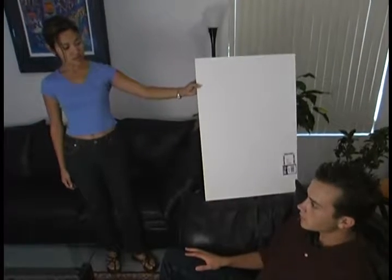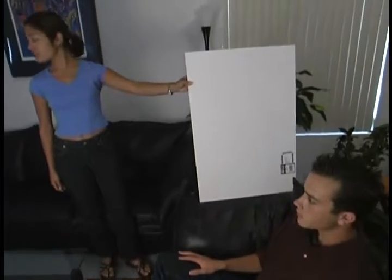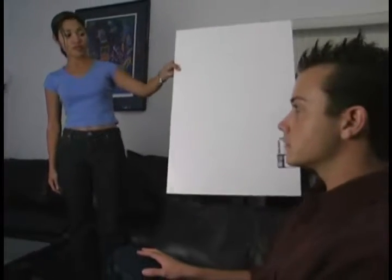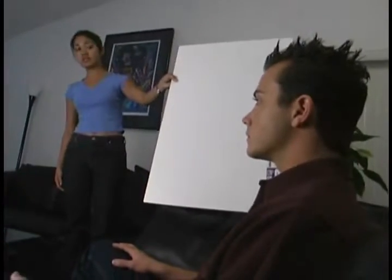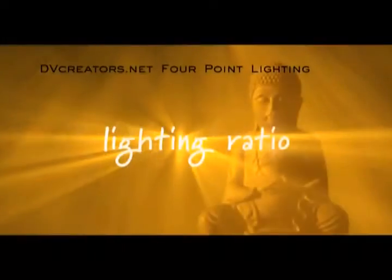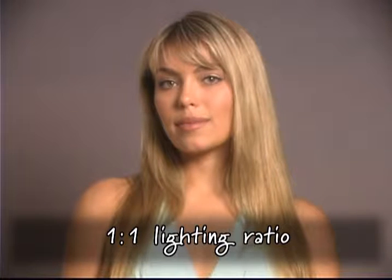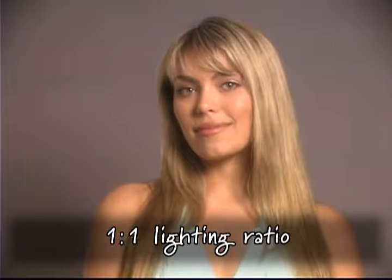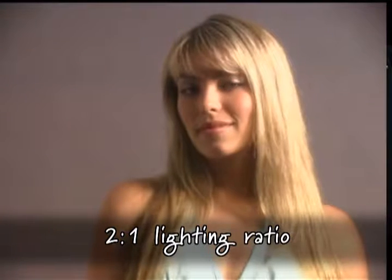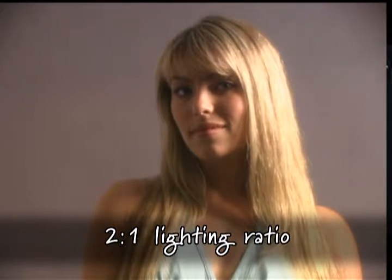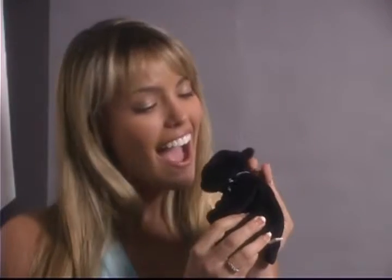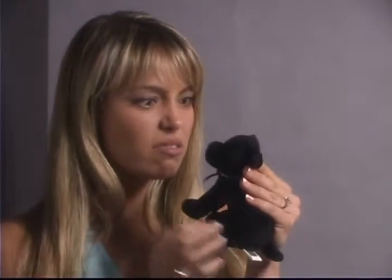Now that you know what tools you can use for fill, how do you decide how much fill you want? The amount of fill you use determines your lighting ratio. Lighting ratio is a term expressing the difference between the brightness of a subject's brighter side and the darker side. If the lights shining on both sides of your subject are equal, you have a lighting ratio of 1 to 1. If you make one light half the intensity, you now have a lighting ratio of 2 to 1. You'll choose a lighting ratio to create a mood and make your subjects look good.